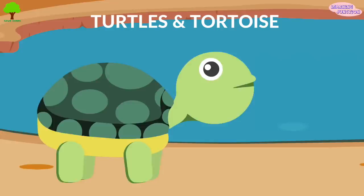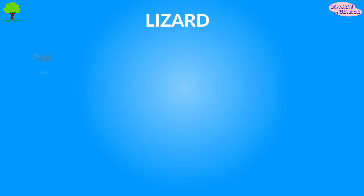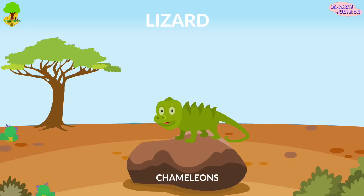Tortoises dwell on land while turtles live in the water some or nearly all of the time. Lizards are found almost all over the world. They eat ants, spiders, cicadas, termites, small mammals, and even other lizards.